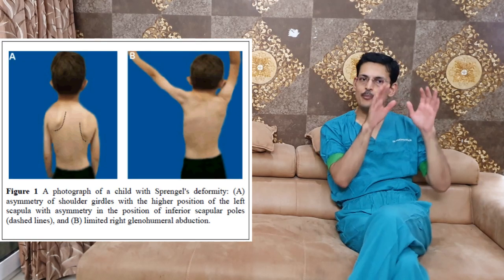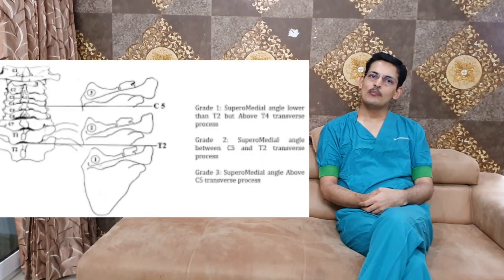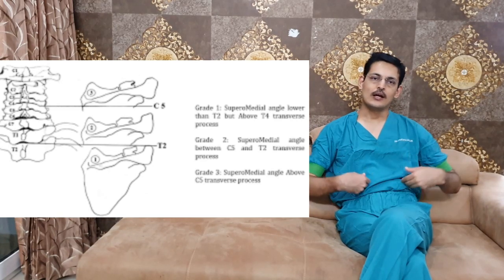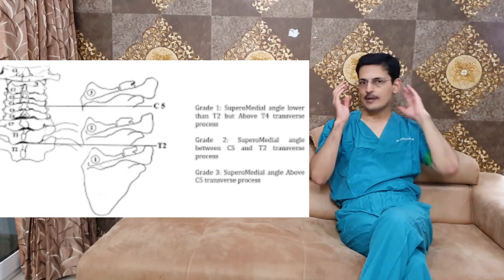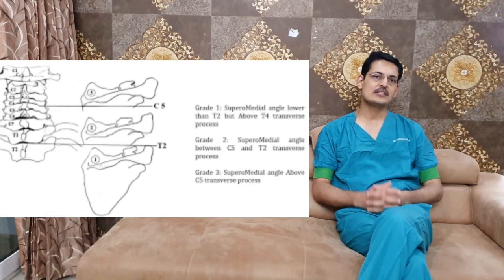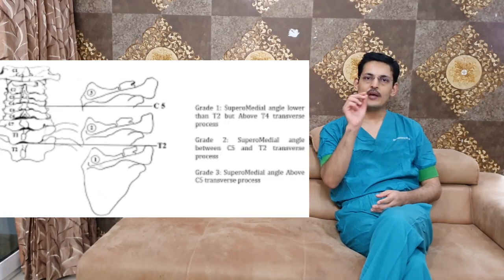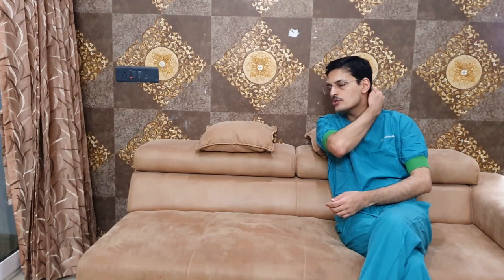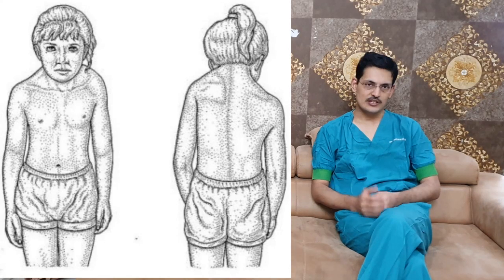In Sprengel's shoulder, the scapula blade or shoulder blade is at a higher level. Morphologically, the scapula is a cervical appendage — it is in the neck. During the course of development in pregnancy, the scapula descends from the neck to the shoulder level. If there is any problem during pregnancy, closure of the embryonic arteries leads to improper descent, and the scapula fails to descend, resulting in Sprengel's shoulder.